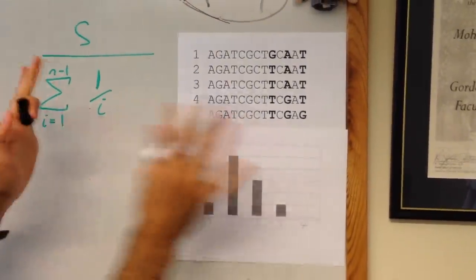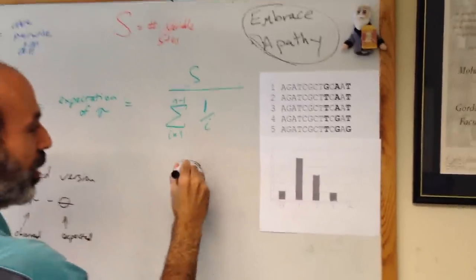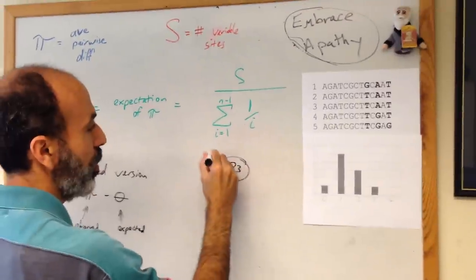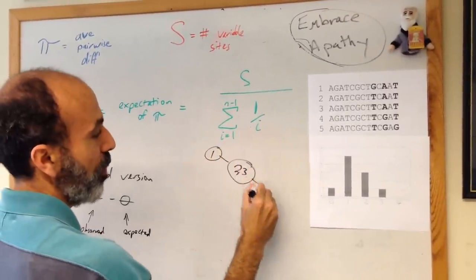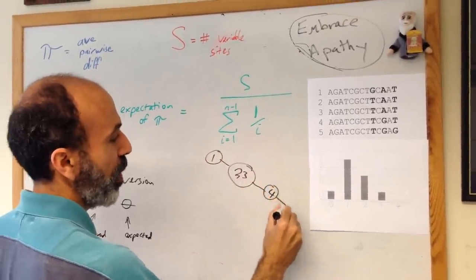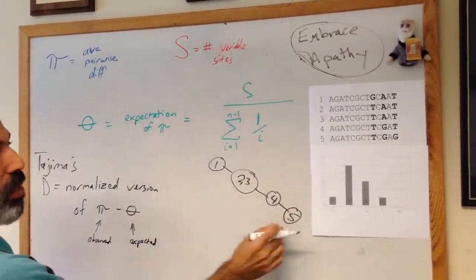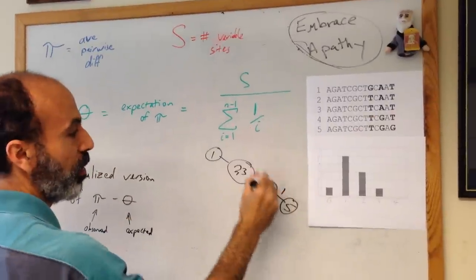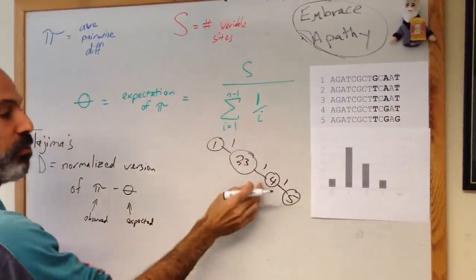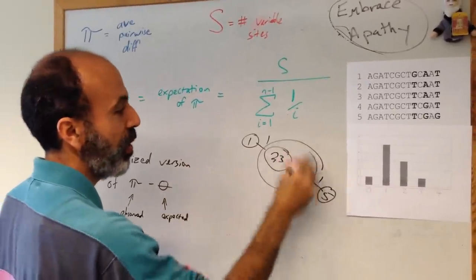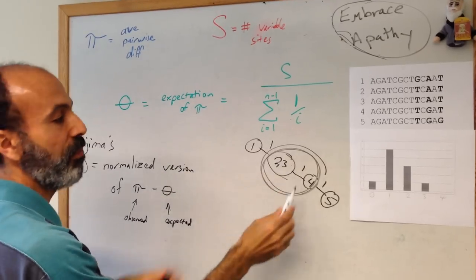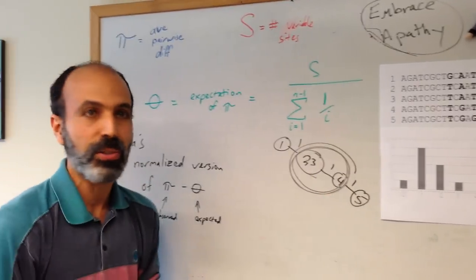If you were to draw a diagram of the relationships here, individuals 2 and 3 are identical, individual 1 differs by one base, individual 4 differs by one base, and individual 5 differs by another base. So 5 differs from 1 at three sites. Individual 4 differs from 2 and 3 at 1. The bulk of the population is pretty closely related, but there's some variation and a few on the outskirts.